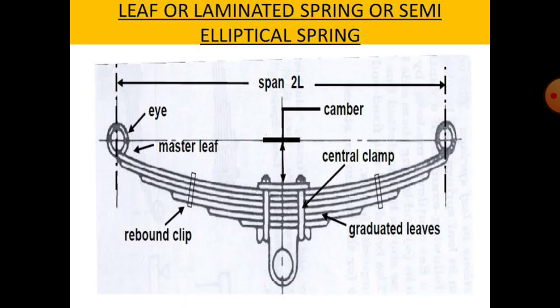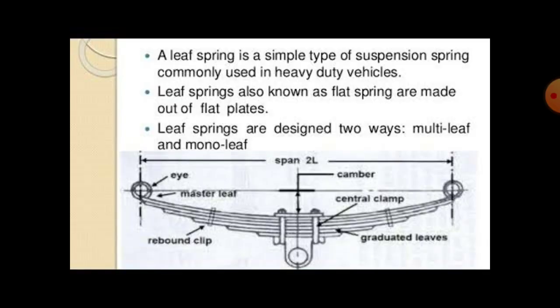In the semi-elliptical leaf spring diagram, the longest leaf is known as the master leaf. We can also see the central U-bolt, rebound clip, and graduated leaves. A leaf spring is a simple type of suspension spring commonly used in heavy duty vehicles. Leaf springs, also known as flat springs, are made out of a flat plate. Leaf springs are designed two ways: multiple leaf spring or mono leaf spring.